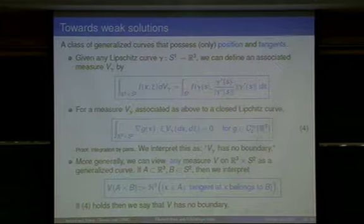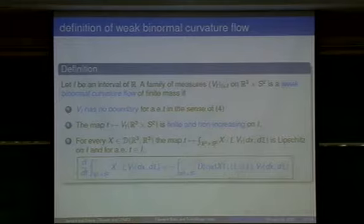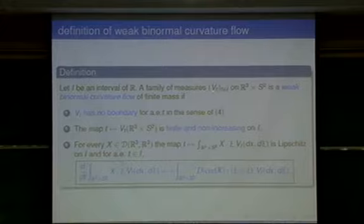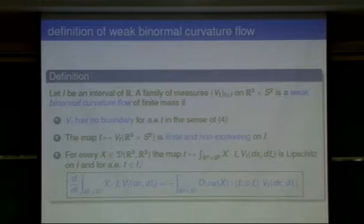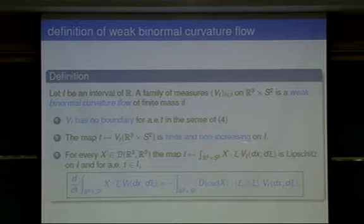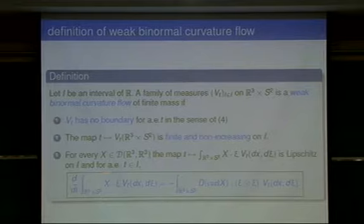Any measure V on R3 cross S2 is viewed as a generalized curve with no boundary if this condition holds. In this setting, the definition of a weak solution is: at every time T we have a measure on R3 cross S2, at every time T it has no boundary in the weak sense, the total mass is finite and non-increasing on the interval I, and the balance law identity satisfied by smooth solutions holds.